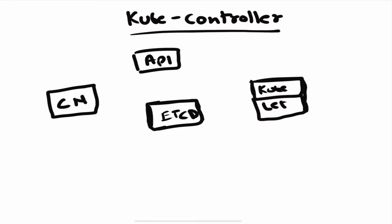Kube controller manager is another component of the Kubernetes ecosystem that actually manages all the operational work. It's actually not a single component — it's a combination of multiple smaller components, but they are packaged and installed as a single binary. If you are deploying your cluster using kubeadm it would be running as a pod, or if you are deploying your cluster from scratch you can just download the binary from the Kubernetes release pages and run it as a service.